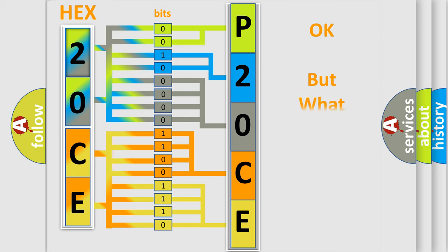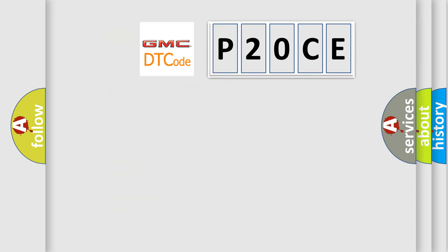We now know in what way the diagnostic tool translates the received information into a more comprehensible format. The number itself does not make sense to us if we cannot assign information about what it actually expresses. So, what does the diagnostic trouble code P2OCE interpret specifically for GMC car manufacturers?